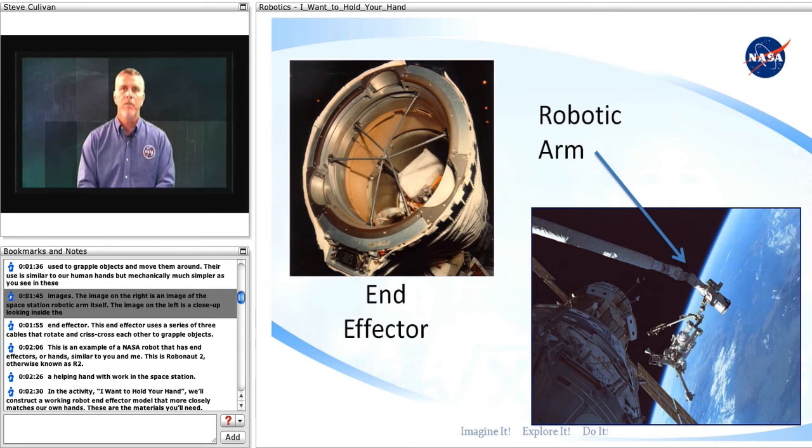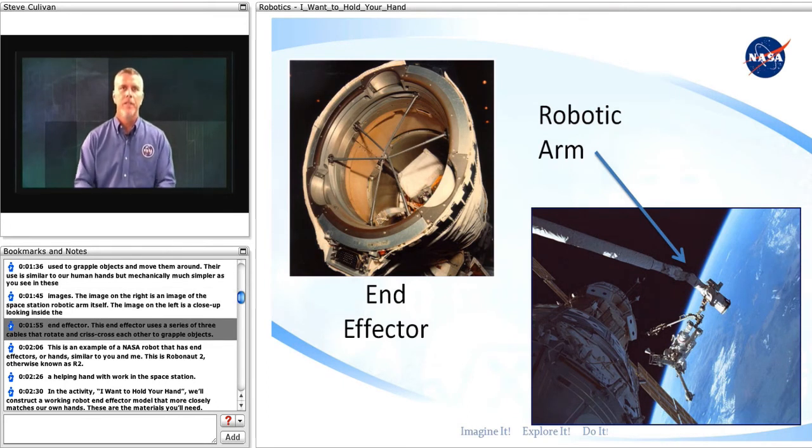The image on the right is an image of the space station robotic arm itself. The image on the left is a close-up looking inside the end effector. This end effector uses a series of three cables that rotate and crisscross each other to grapple objects.